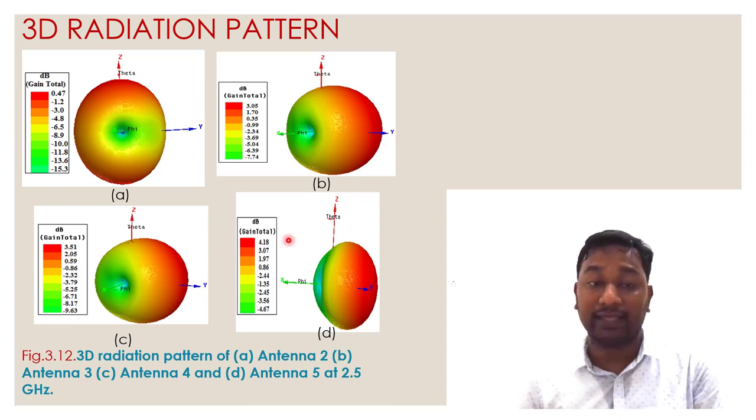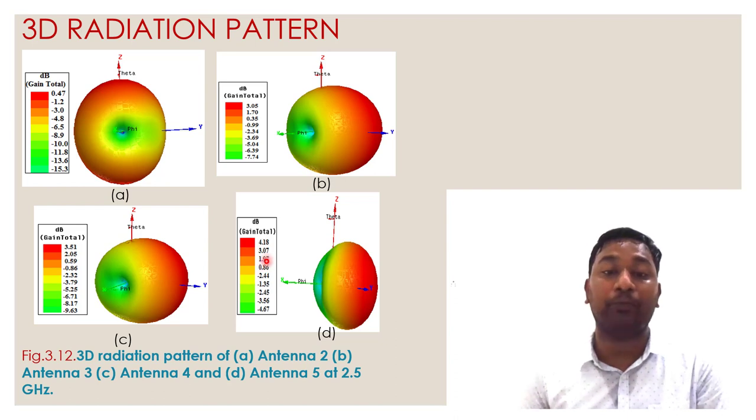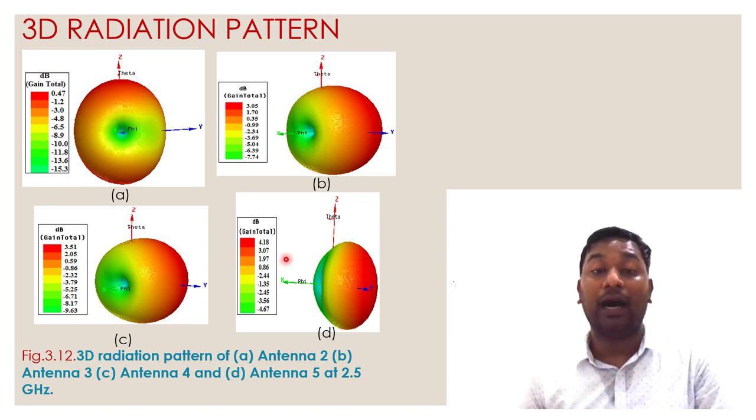That is nearly 3.69 dB gain enhancement in a particular band without changing the other parameters of the antenna. We can discuss diagonal pattern theory elaborately in the journal.